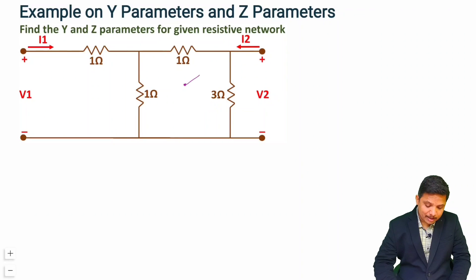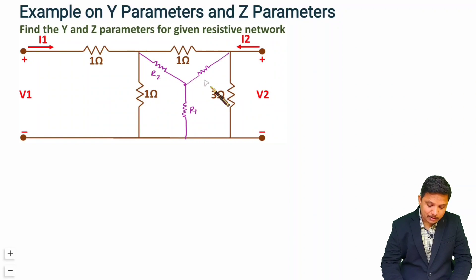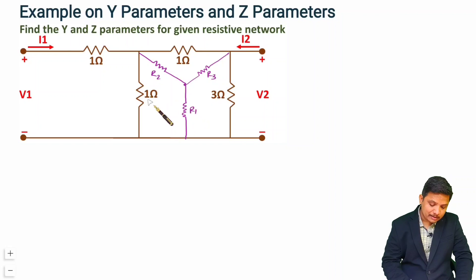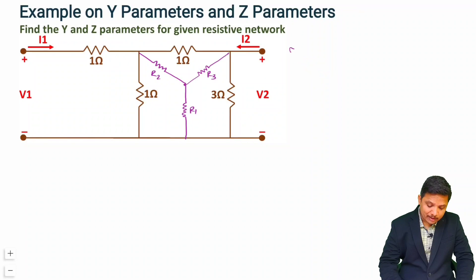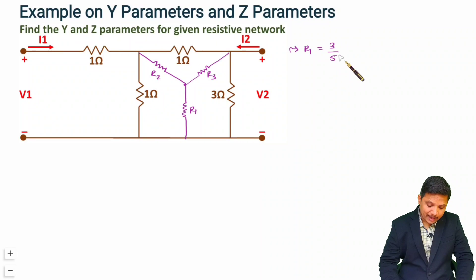I am drawing the equivalent star network and will explain how to calculate the resistor values. Let us call them R1, R2, and R3. The value of R1 is the product of the two adjacent resistors in the delta divided by the sum of all three. That is 1 × 3 divided by (1 + 1 + 3) = 3/5 = 0.6 ohm.